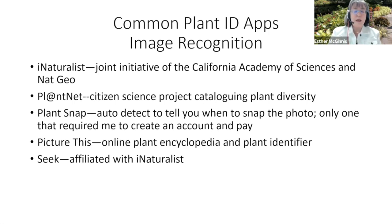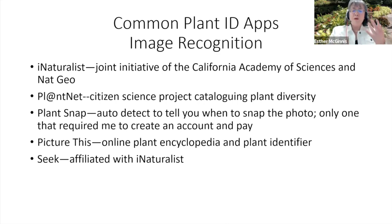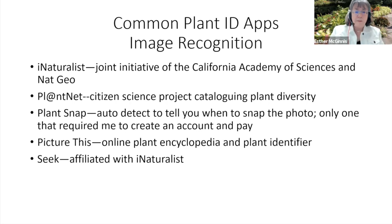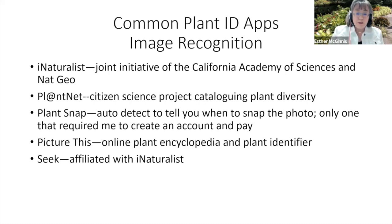The five apps are: iNaturalist, a joint venture between the California Academy of Sciences and National Geographic; PlantNet, a citizen science project on a global basis cataloging plant diversity; PlantSnap and PictureThis, which are more like commercial apps — PlantSnap was the only one that required me to create an account and put a credit card on file once the free trial ended; and PictureThis, which has an online plant encyclopedia. The fifth app was Seek, which is affiliated with iNaturalist.